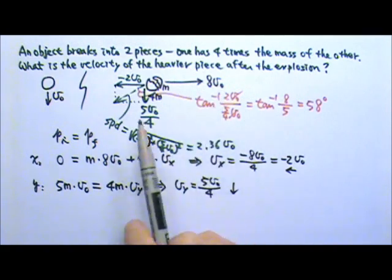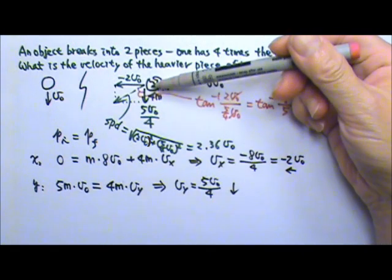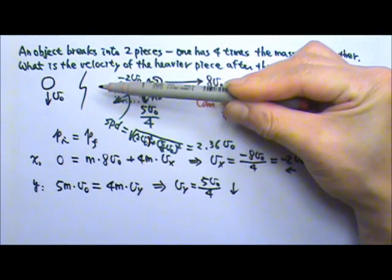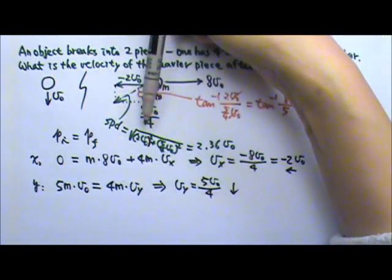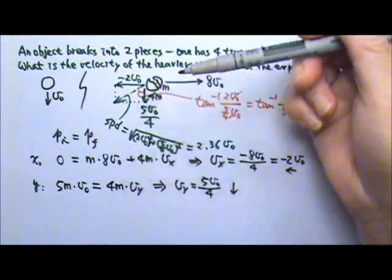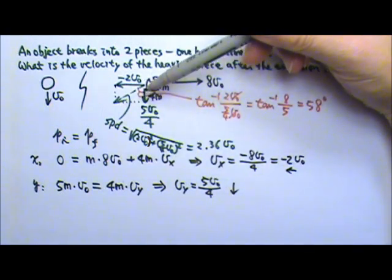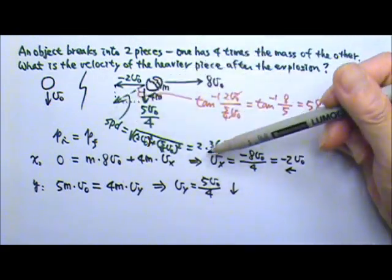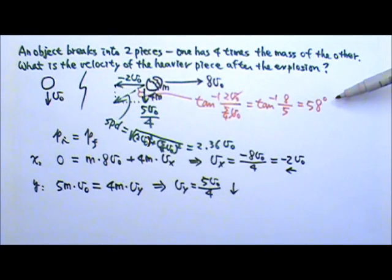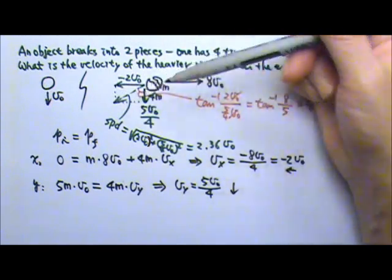So there are two ways to answer the final velocity of this heavier piece. One way is to answer by components: 2V0 going to the left and 5/4 · V0 going downward. Or we can express the velocity in terms of magnitude and direction — the magnitude is 2.36V0, and the direction is 58 degrees relative to the original velocity's direction.